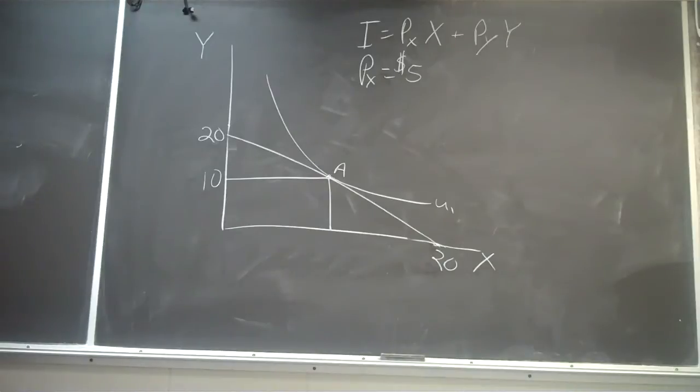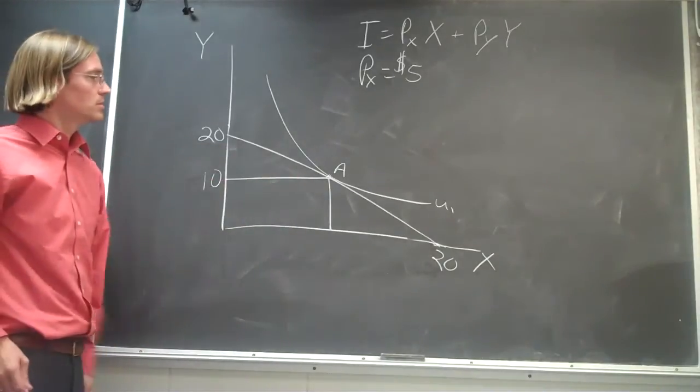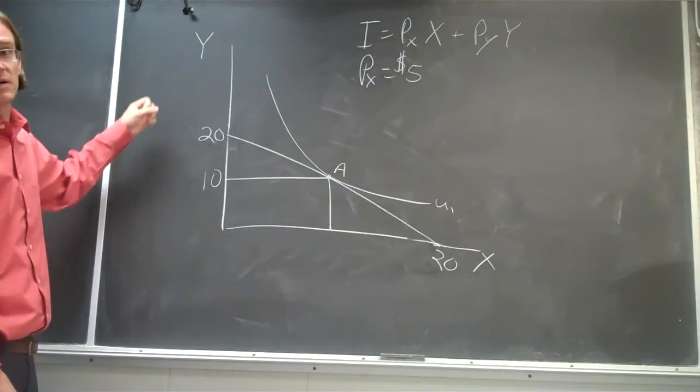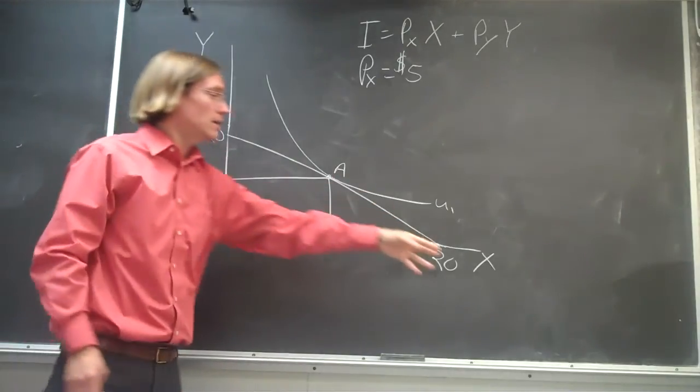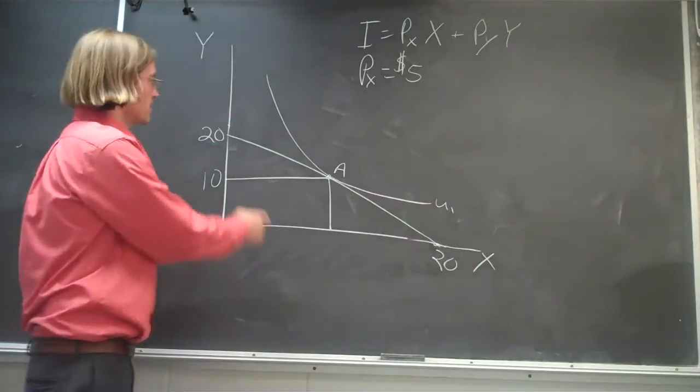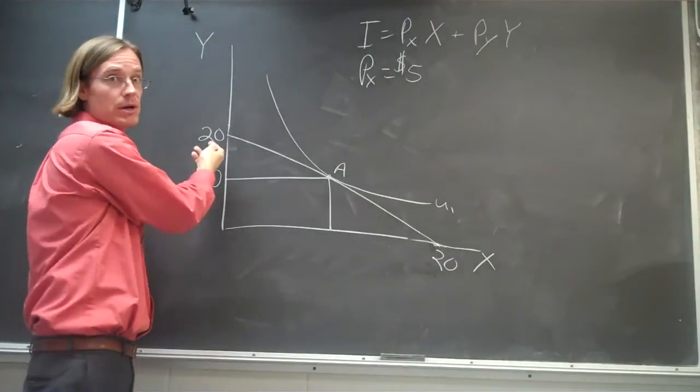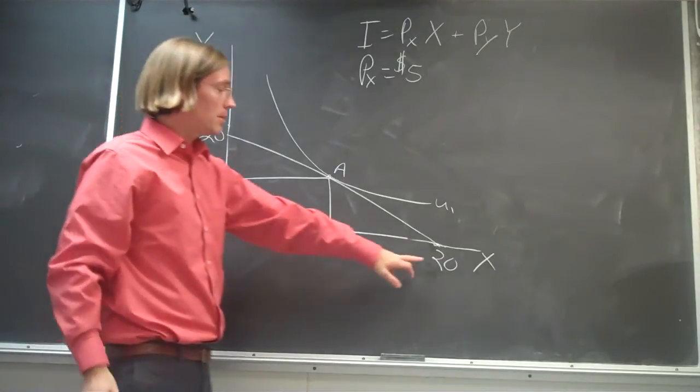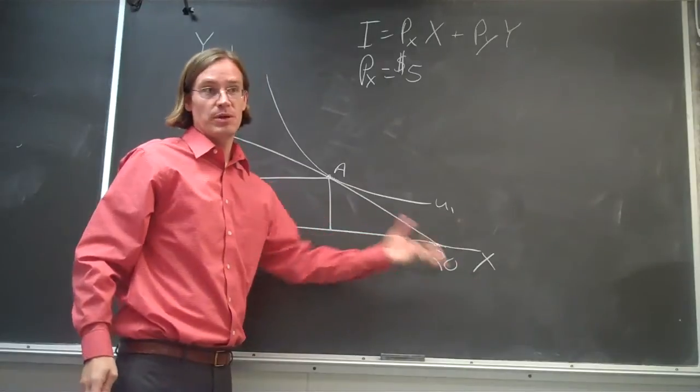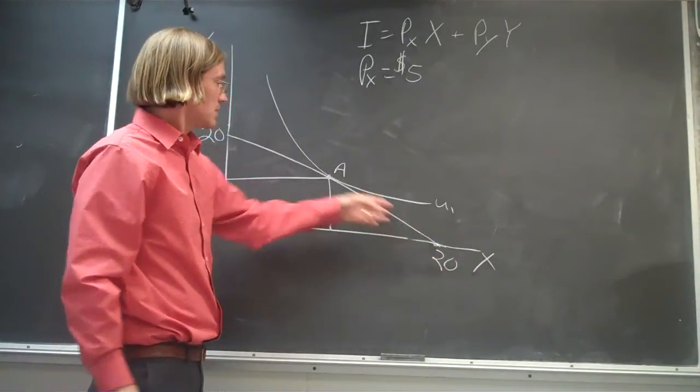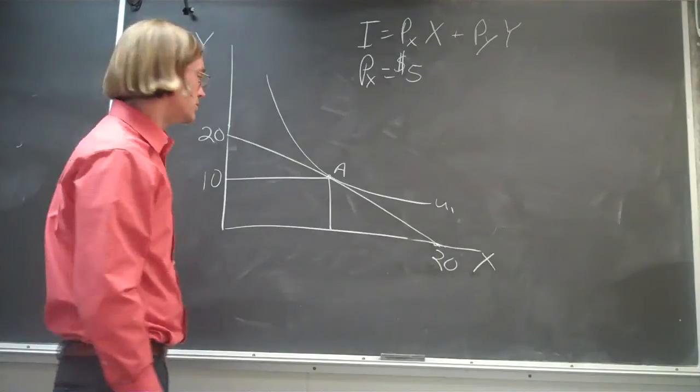We have a problem here with the budget set of a consumer. So a consumer is limited to buying two goods, good Y and good X. They can buy 20 units of good Y if they spend all their money on good Y. They can buy 20 units of good X if they spend all their money on good X, or they can buy some linear combination of the two.